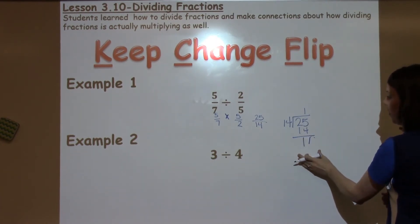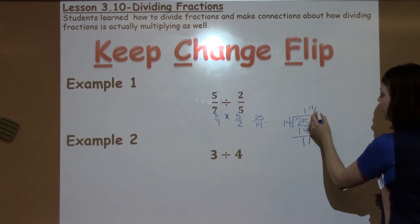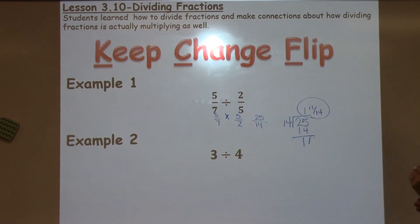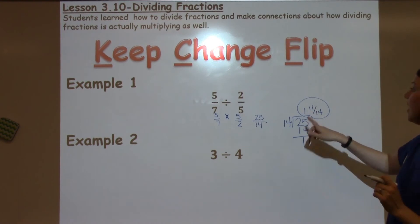So that's going to be my remainder, which is going to go to the top part of my fraction, which is my numerator. My divisor is my denominator. So I've got 1 and 11 fourteenths.